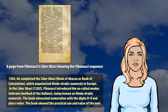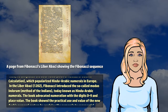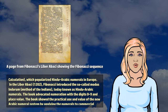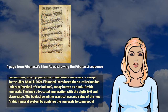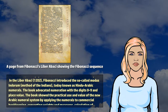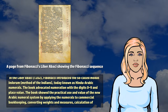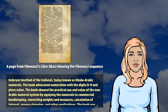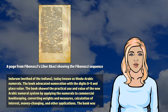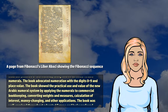In the Liber Abaci of 1202, Fibonacci introduced the so-called modus indurum, method of the Indians, today known as Hindu-Arabic numerals. The book advocated numeration with the digits 0 to 9 and place value.